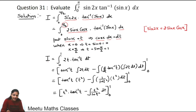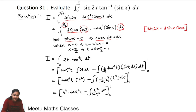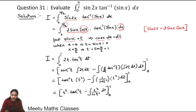So our integral I will have limits 0 to 1. We replace: 2 × (cosx·dx) becomes dt, sinx becomes t, and tan⁻¹(sinx) becomes tan⁻¹(t). So our integrand becomes 2t·tan⁻¹(t).